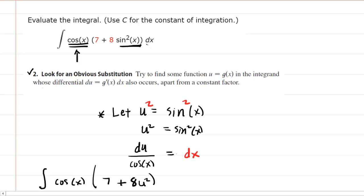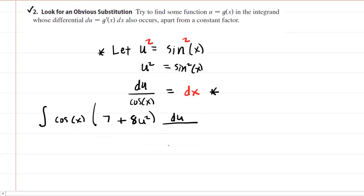At the end of our integral, we have dx. Here is why we solved for dx. Recall that we said dx equals du over cos(x). What's nice here is that the cos(x) in the numerator and the cos(x) in the denominator cancel each other out. So we are left with a relatively simple integral of 7 plus 8u² du.